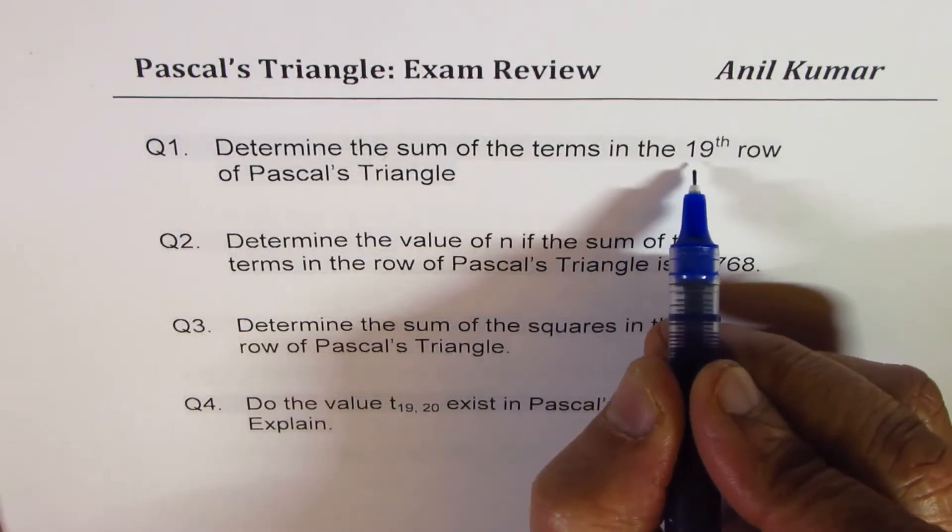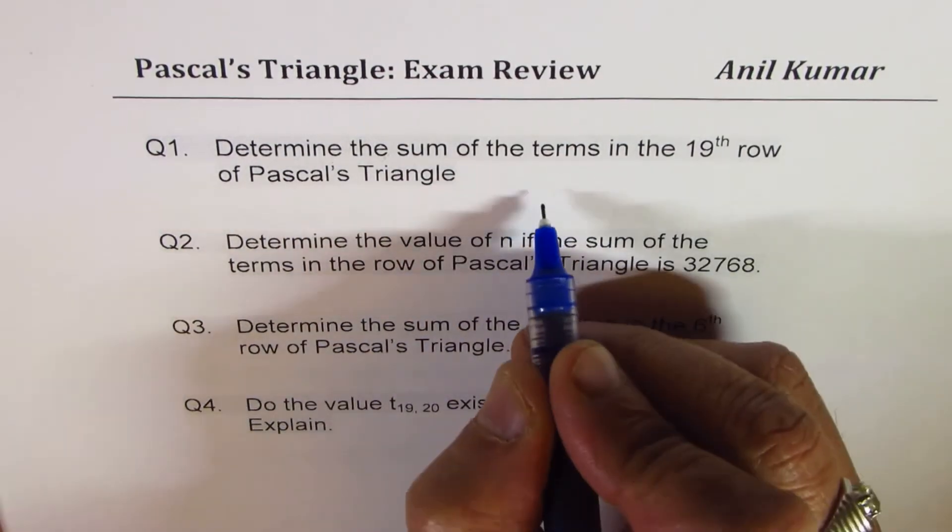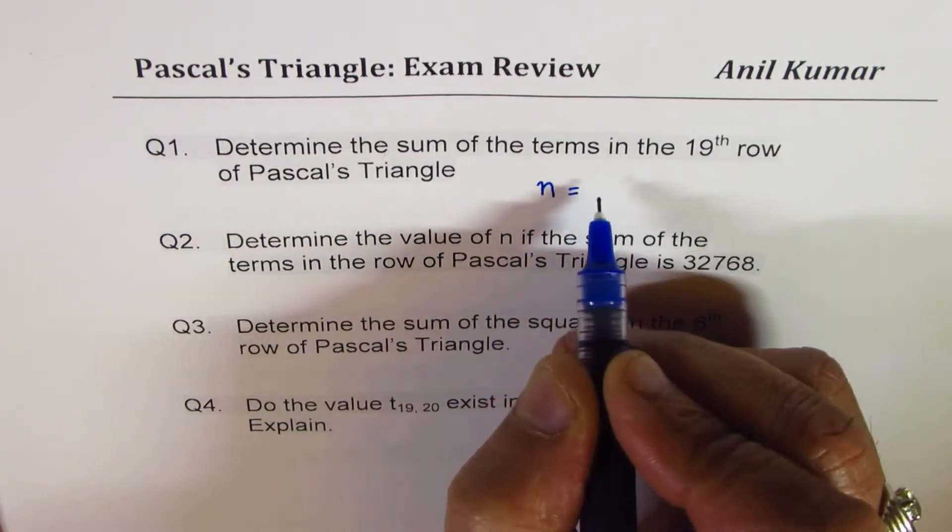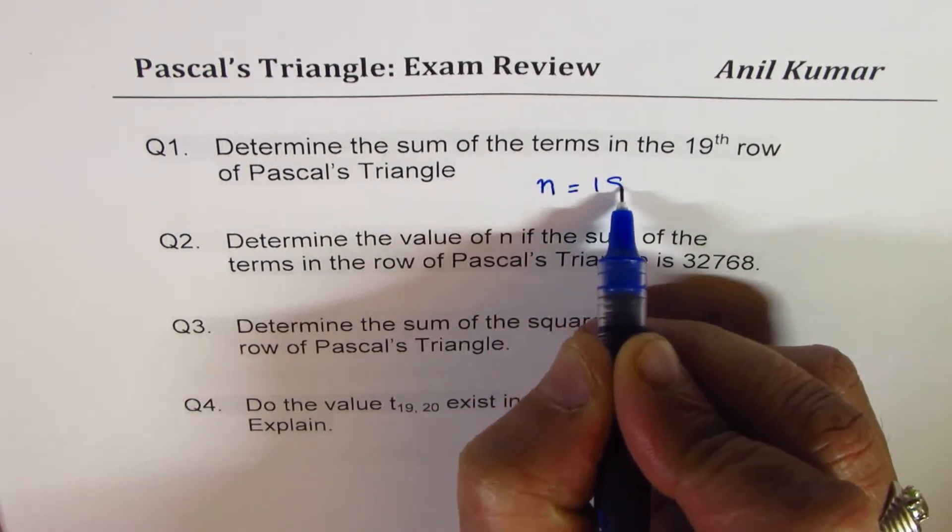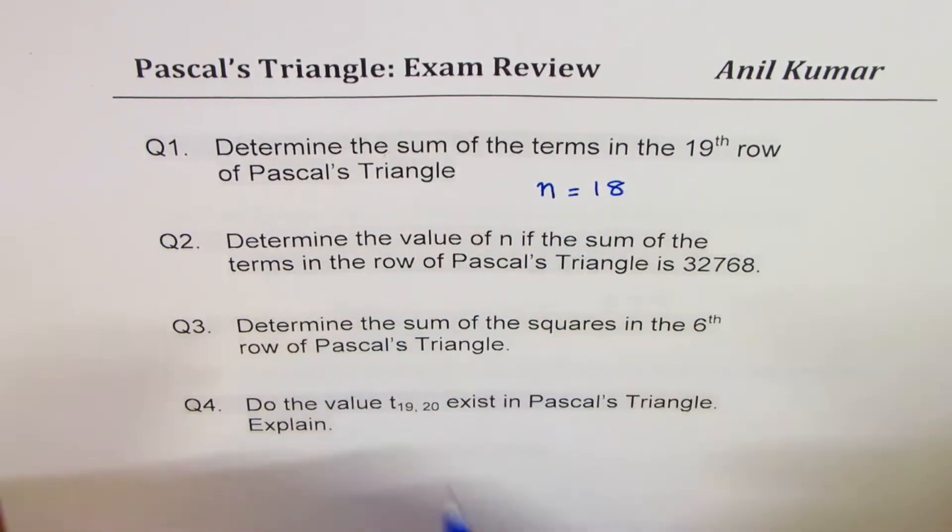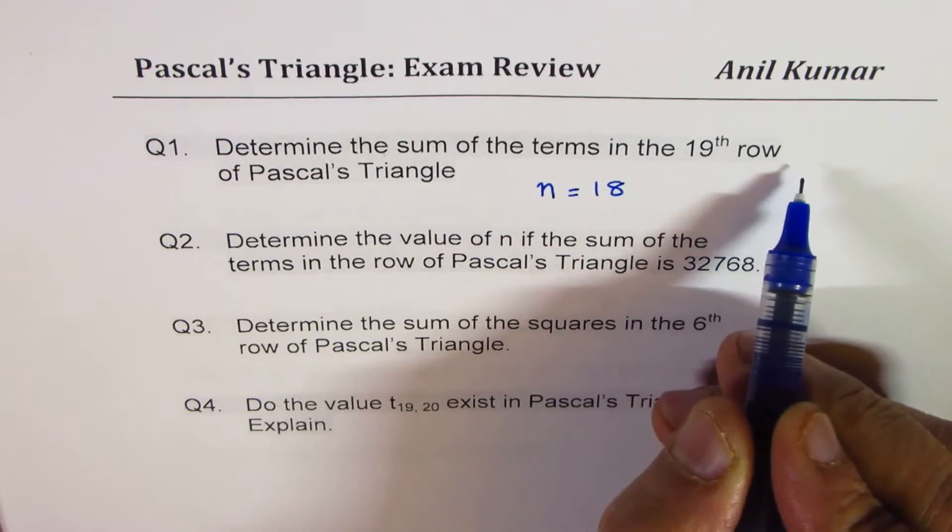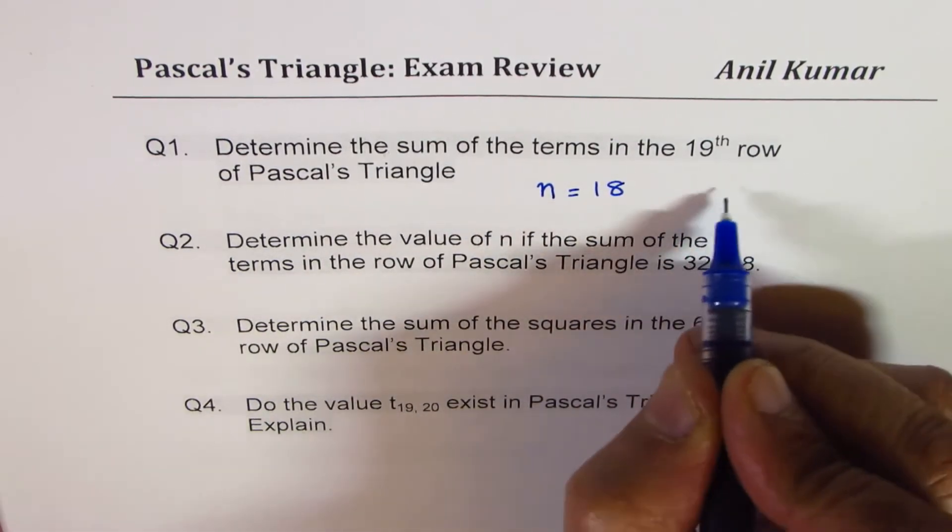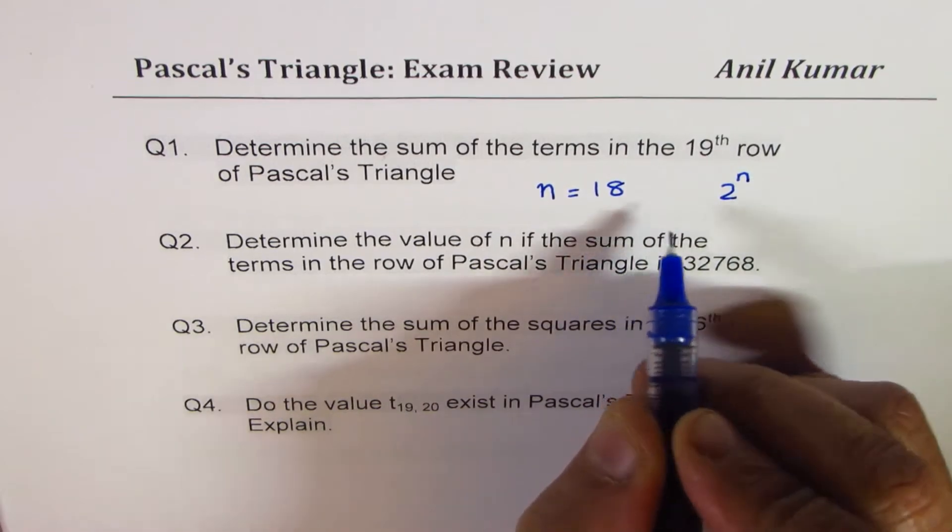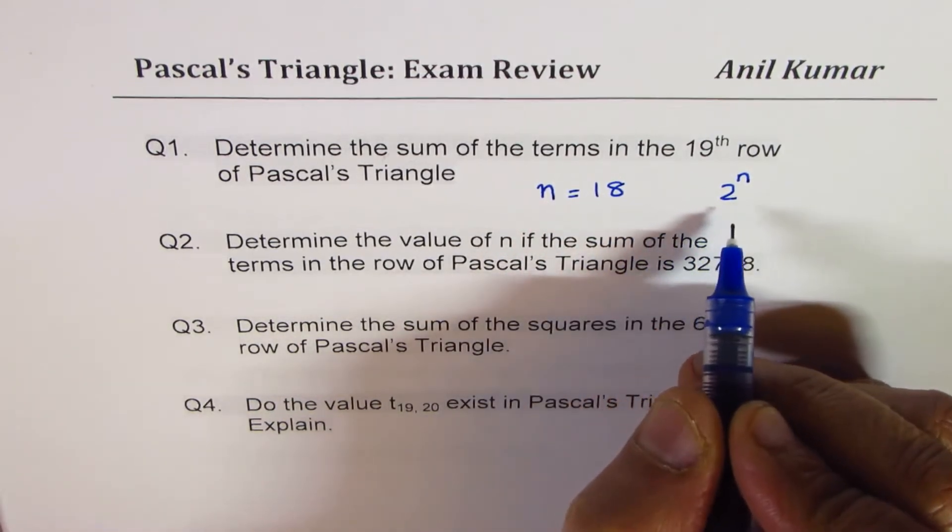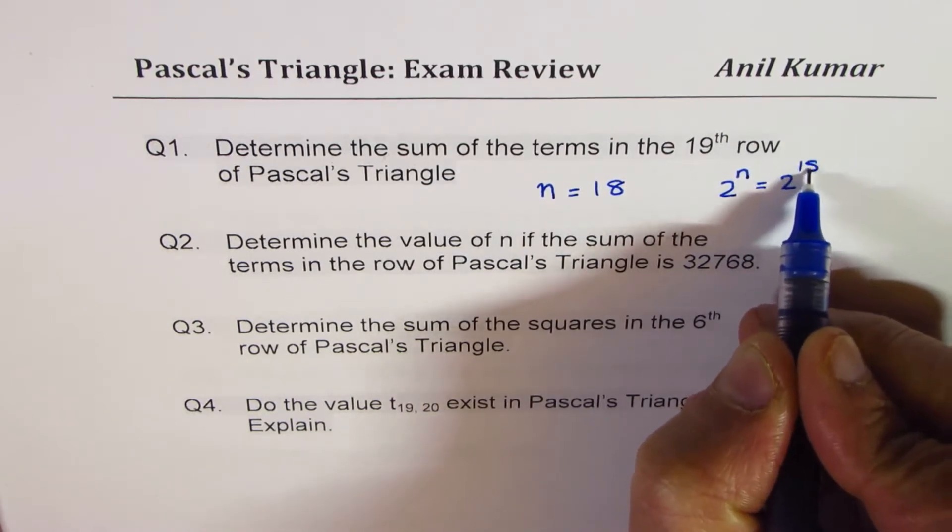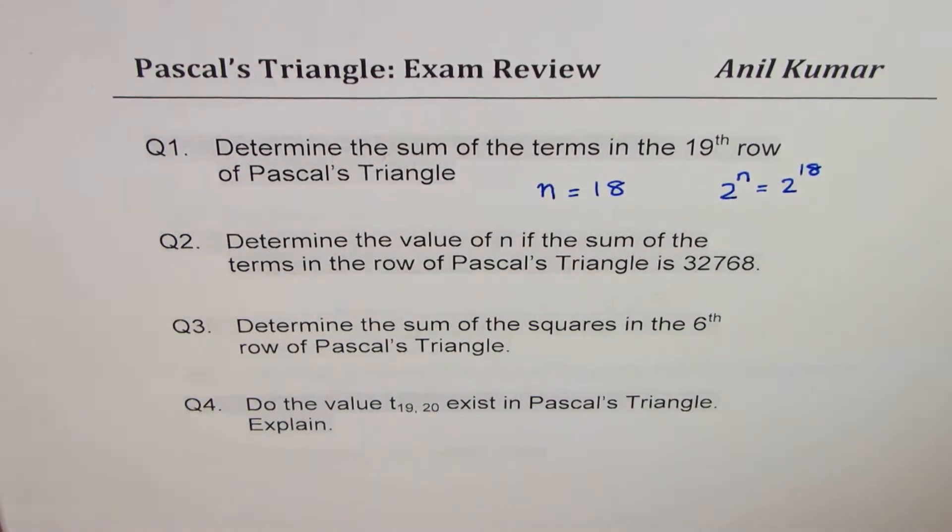When we say 19th row, it means the value of n is equal to 19 minus 1, which is 18. That is very important. Value of n is 18. And sum of all the numbers in a row is 2 to the power of n. Since n is 18, we have to look for 2 to the power of 18. So that becomes the answer for us.